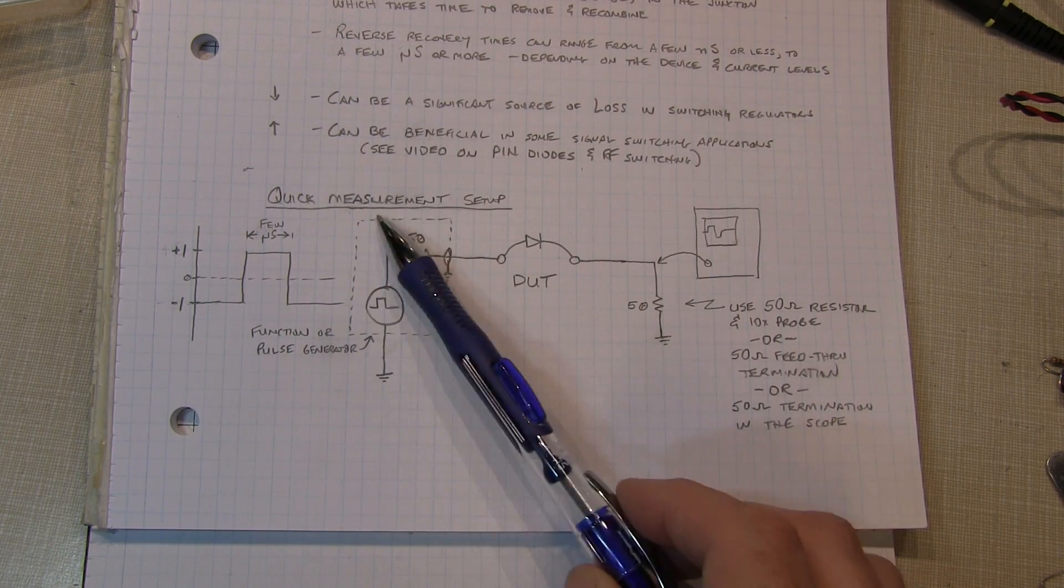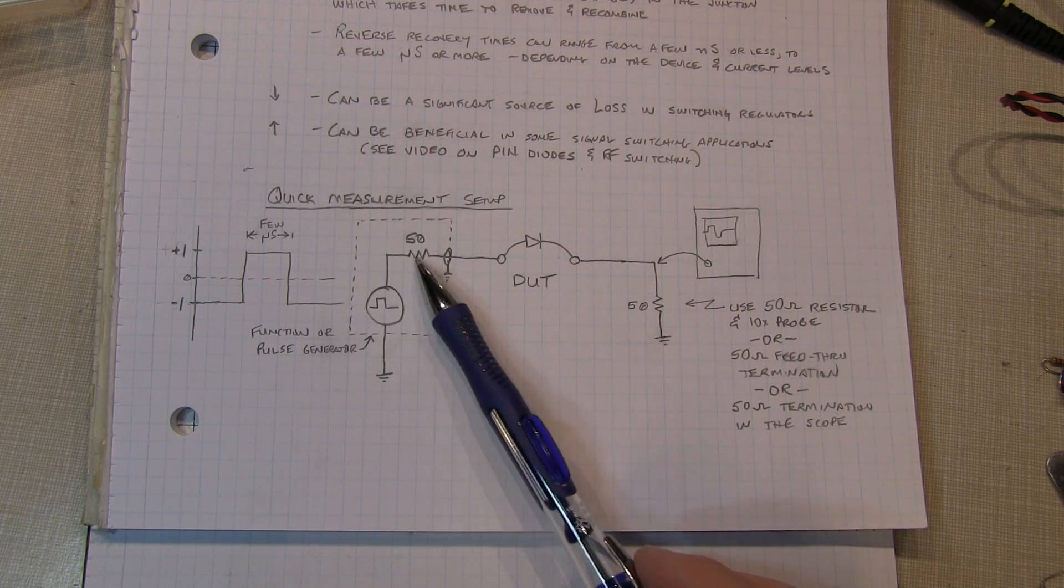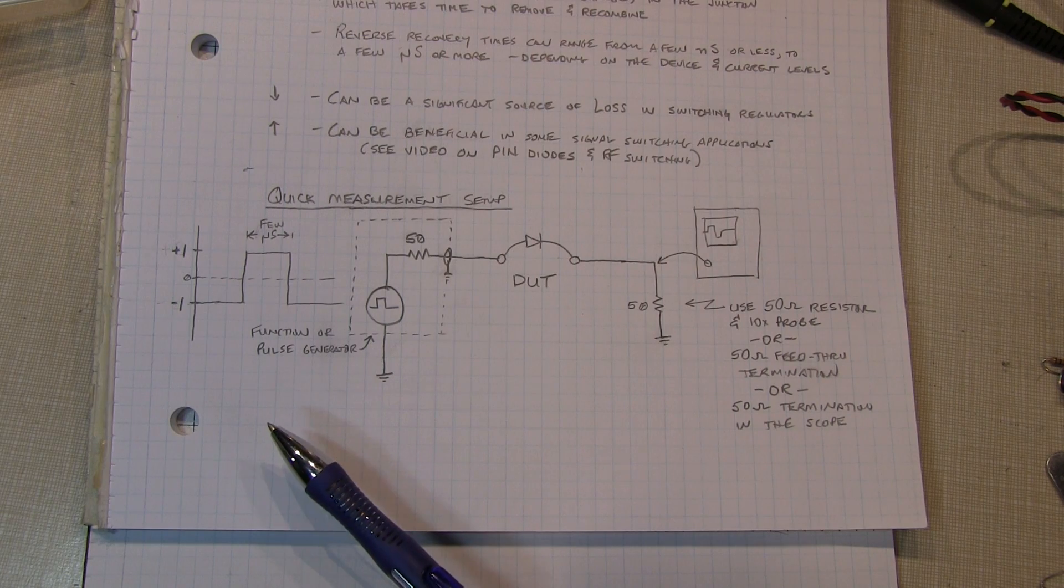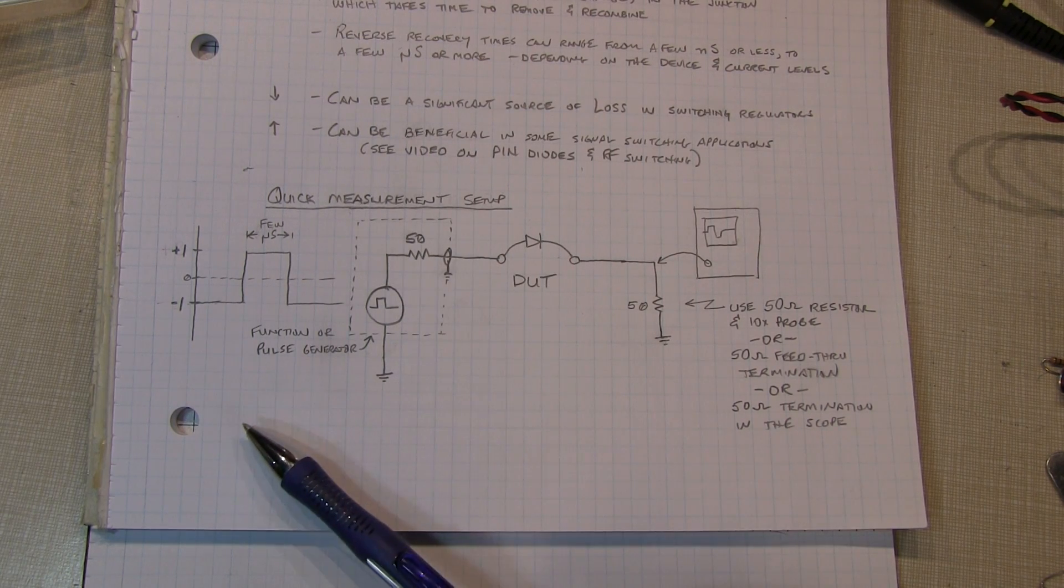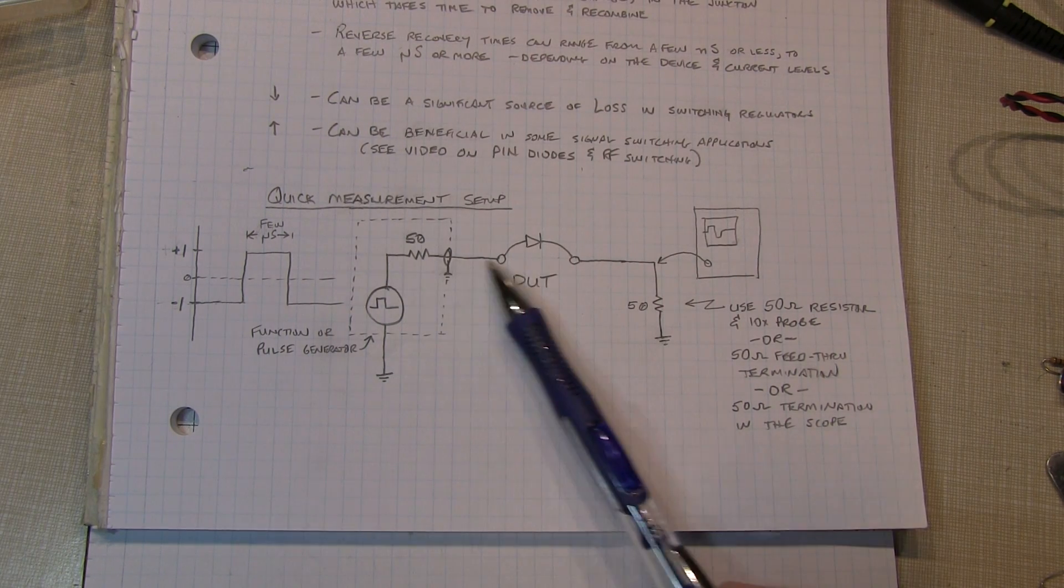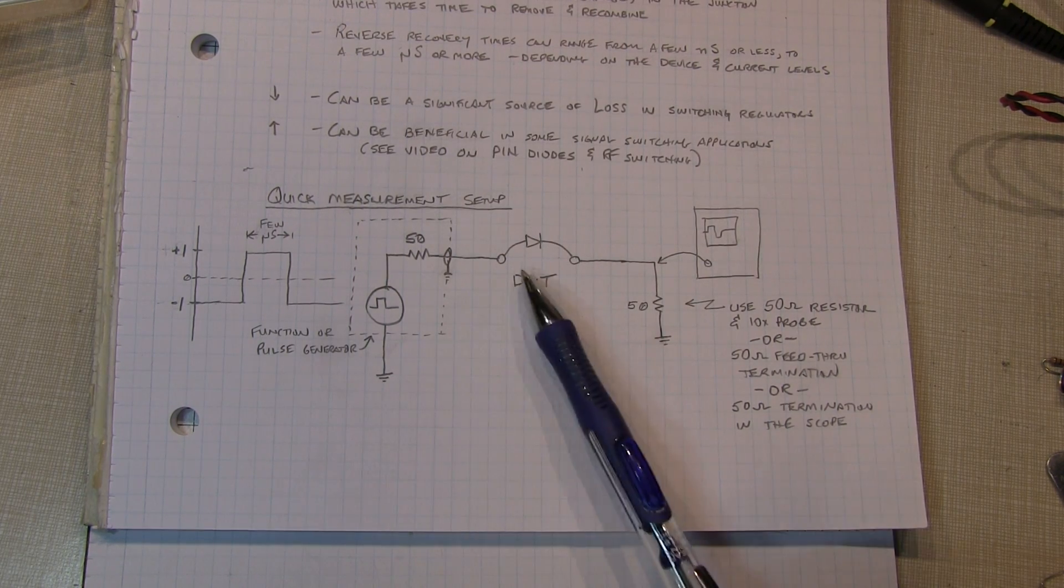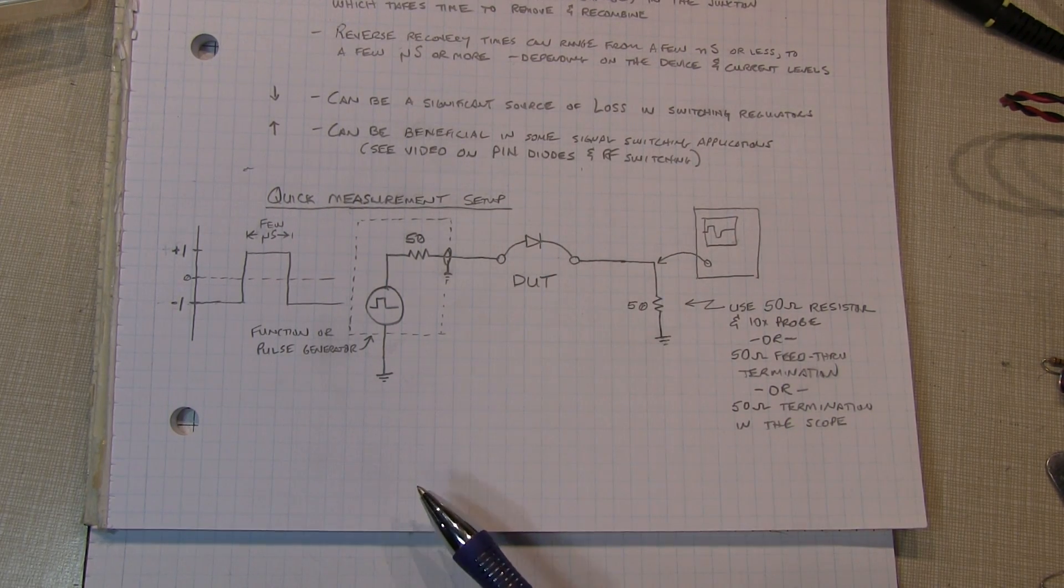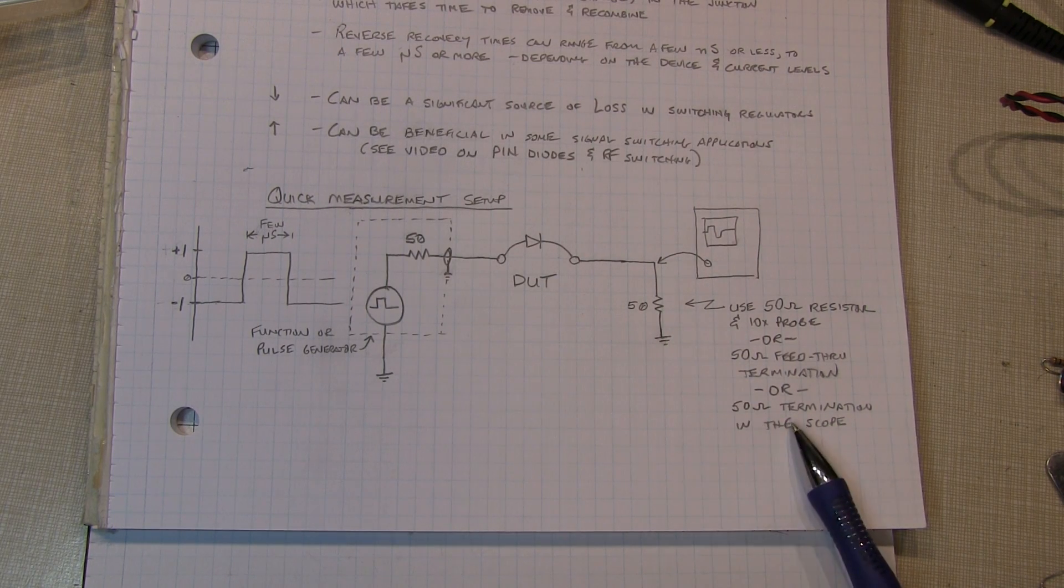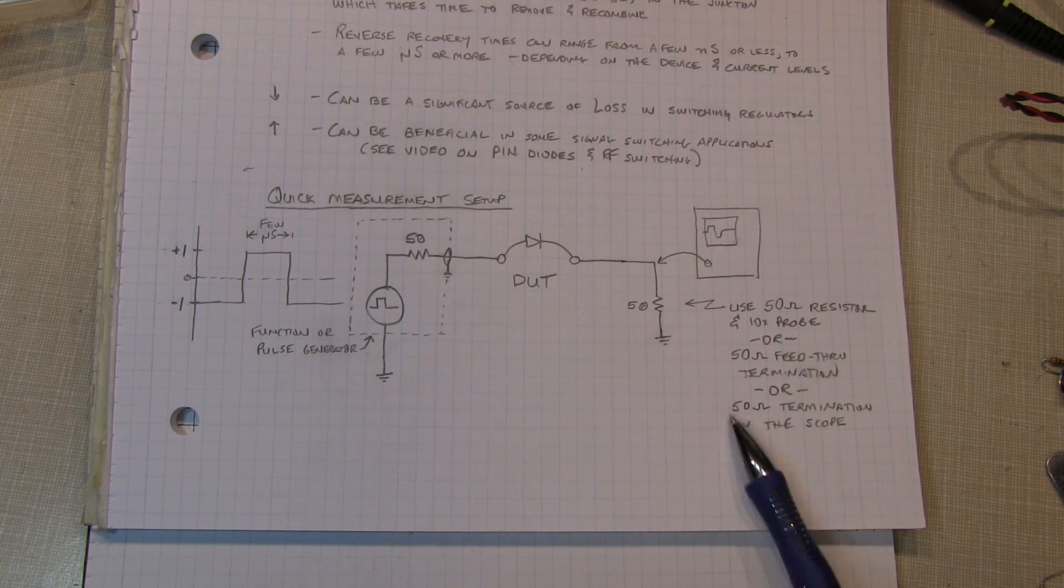The pulse generator itself, like most function generators, has essentially a 50 ohm output impedance. So that's going to tend to limit the current. We're going to basically just send that directly through our device under test, our diode that we're testing, and go into a 50 ohm termination. In my case, I'm using the 50 ohm termination that's built into the scope.